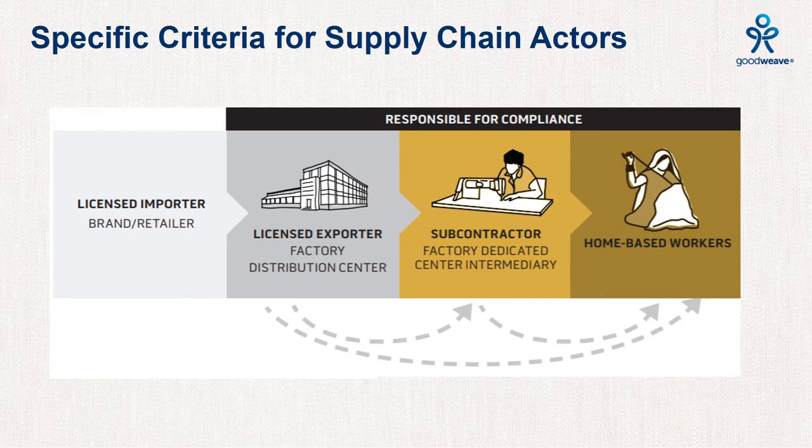Producers at all levels in the supply chain must be aware of and comply with the standard. Where home-based work is carried out, the contractor who assigned work to the home-based worker is considered the employer and is responsible for ensuring compliance with the requirements of the standard. The GoodWeave license holder is also responsible for continuously monitoring compliance at all levels of their supply chain.